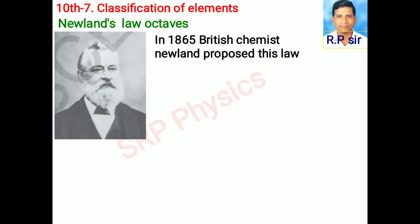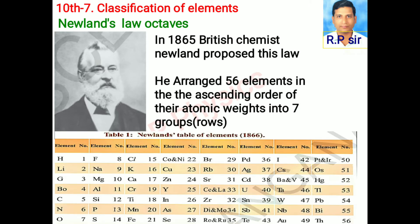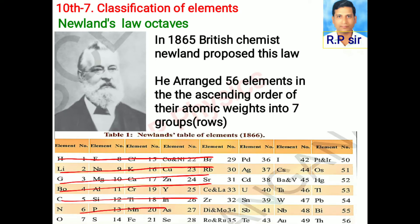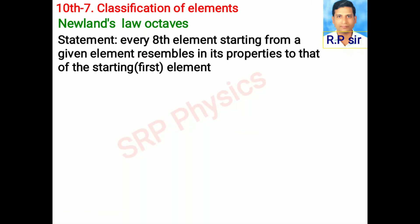Let us know about Newland's Law of Octaves. In 1865, British chemist Newland proposed this law. He arranged 56 elements in the ascending order of their atomic weights into seven groups or seven rows. Statement: every eighth element starting from a given element resembles in its properties to that of the starting or first element.